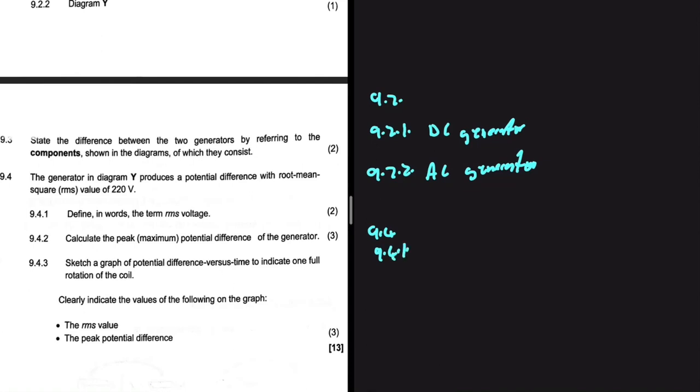Let's look at question 9.4. The generator in diagram Y produces a potential difference with a root mean square value of 220 volts. Question 9.4.1: define the term RMS voltage. The AC potential difference which dissipates the same amount of energy as an equivalent DC potential difference.